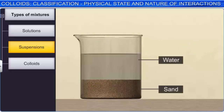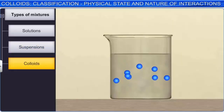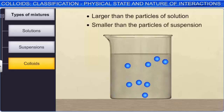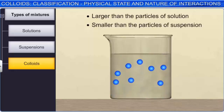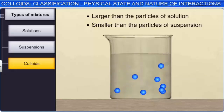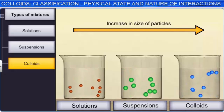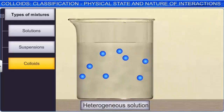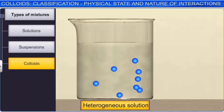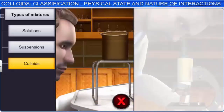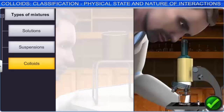Colloids are mixtures whose particles are larger than the particles of a solution, but smaller than the particles of a suspension. The suspended particles in a colloid are small enough to settle down due to gravity. Thus, colloids represent an important and large group of systems intermediate between solutions and suspensions. Therefore, a colloid is a heterogeneous solution in which the particle size ranges from 10 to the power minus 9 to 10 to the power minus 6 meters. These particles are not visible to the naked eye, but can be seen under a microscope. Milk, blood, honey and starch solution are all colloids.